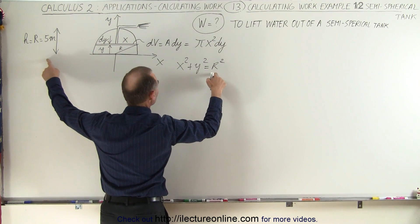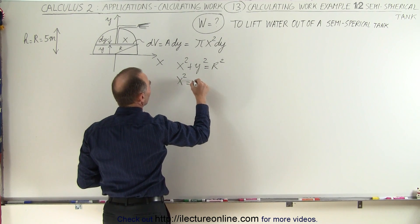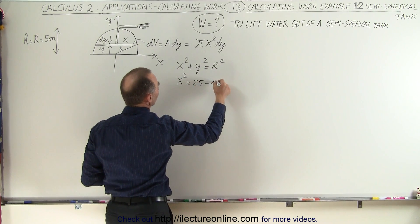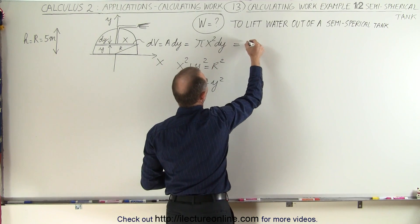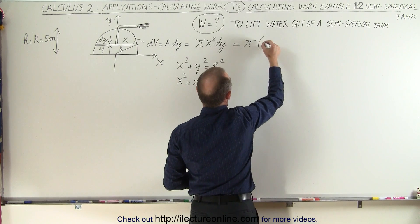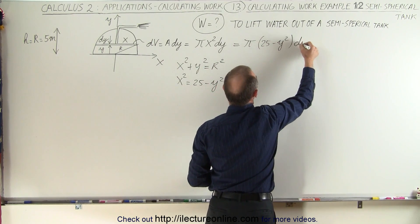In this case r is 5, so it would be 25. Or x² can be written as 25 - y², and we can substitute that in here. So the volume of that slice now becomes π times (25 - y²) times dy.